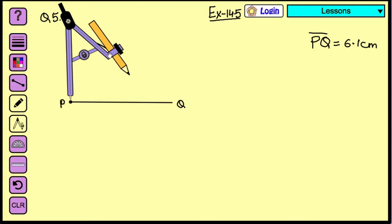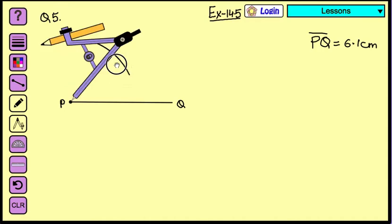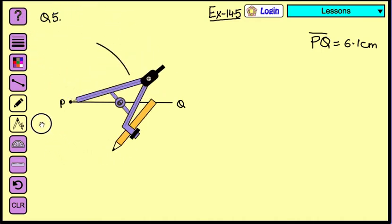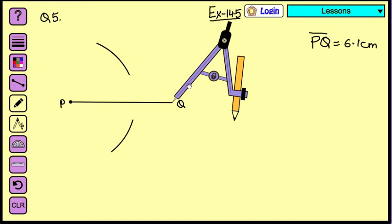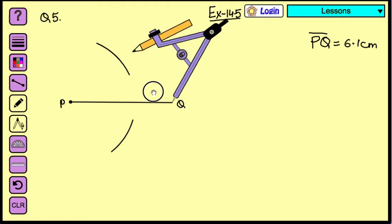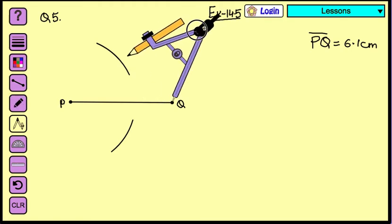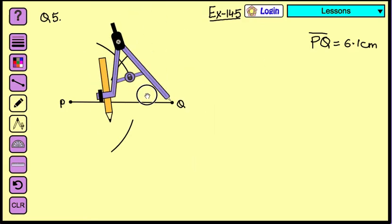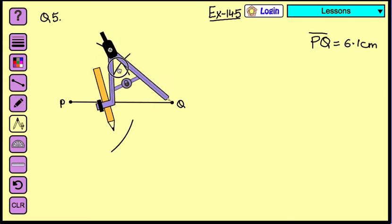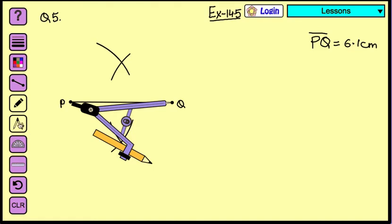Now same way on the other side of the line. Let's just draw it on the other side of the line. Now we will place the needle of the compass on the other end. And we will again mark the arc which is going to cut the arcs which we have drawn earlier.